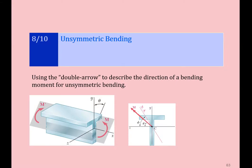Let's move on to this section, which is basically an extended application from eccentric loading and another application of what we learned in pure bending. This is called unsymmetric bending. Unsymmetric bending is when the bending moment is applied to a plane that is not symmetric with respect to the cross-section of the beam. In this demonstration, the plane along which the moment is applied is inclined by theta from the y-axis, which constitutes the symmetric plane. So the bending moment is tilted a little bit from the symmetric orientation.